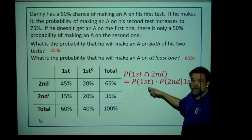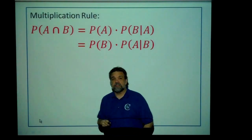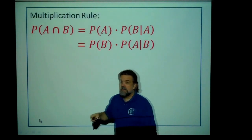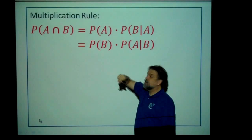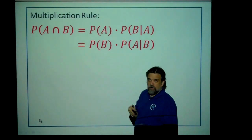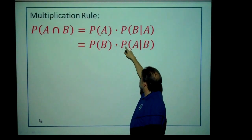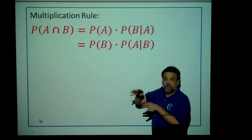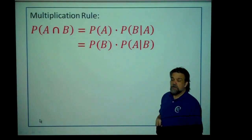This is a very important rule called the multiplication rule. You've got two events, A and B. The probability of both A and B happening is the probability of A times the probability of B assuming that A happened — the probability of B given A. Or you can go the other way and say it's the probability of B happening times the probability of A given B. You can assume that B is going to happen and see what's the probability of A assuming that B has happened. That's the multiplication rule.